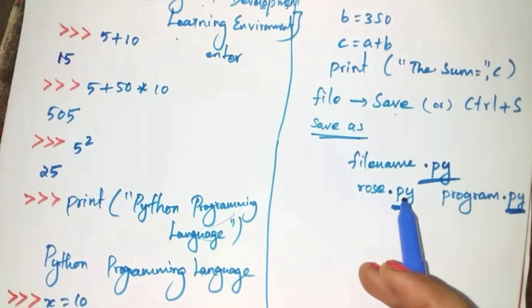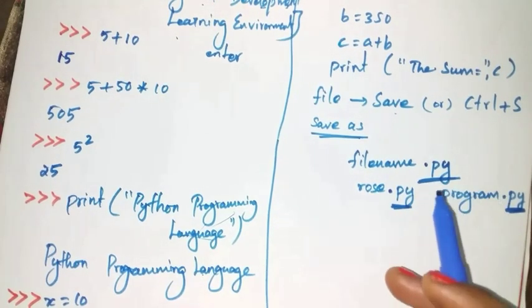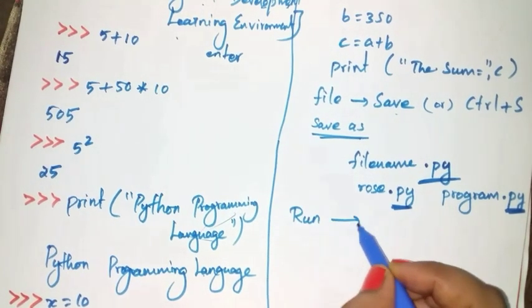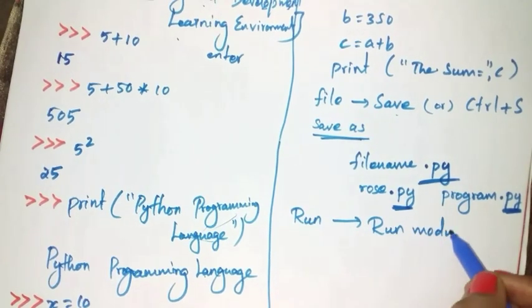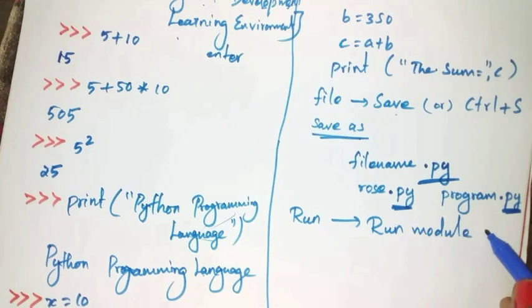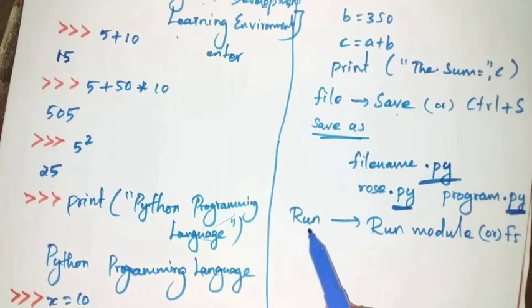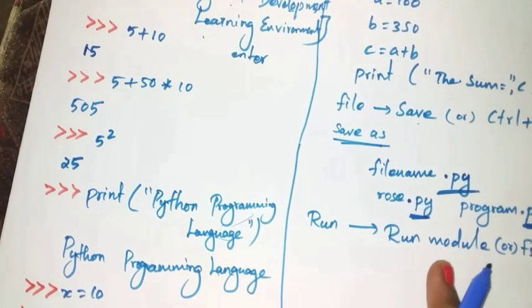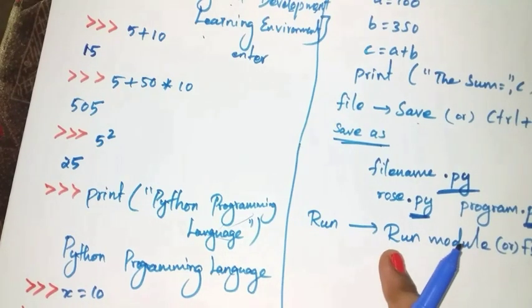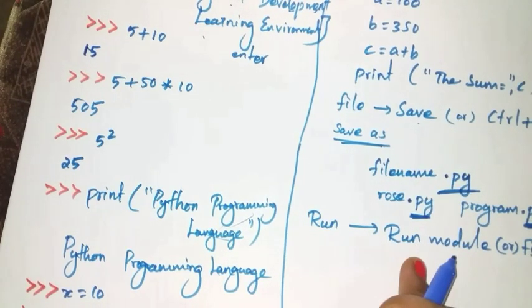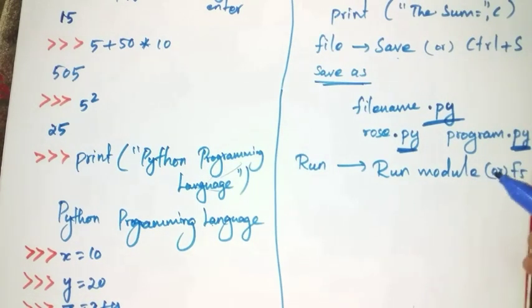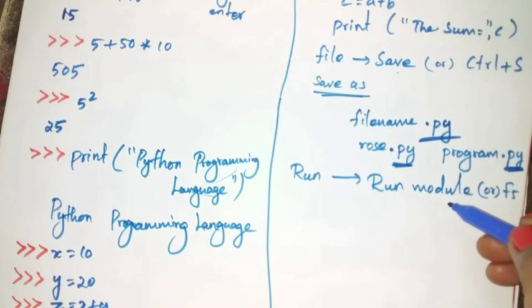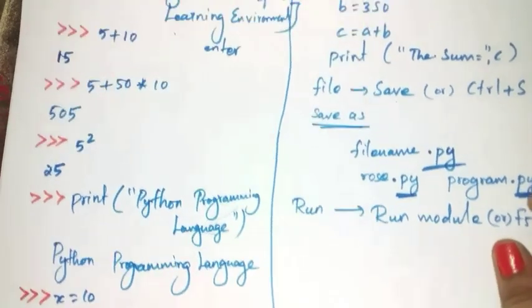After giving the file name, click the Save button to save your code. To run the code and get output, click the Run menu and select Run Module option, or press the keyboard shortcut F5. If your code has any error, it will be shown in red color in the IDLE window. To correct errors, go back to the script editor, make corrections, and save again. If no errors are present, the output will be displayed on the screen.